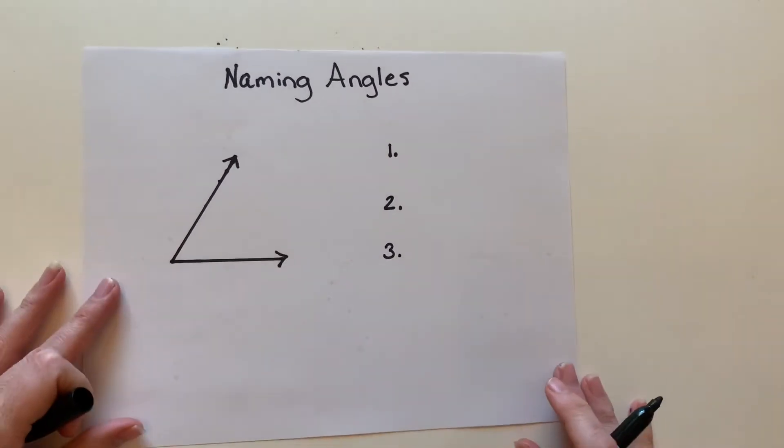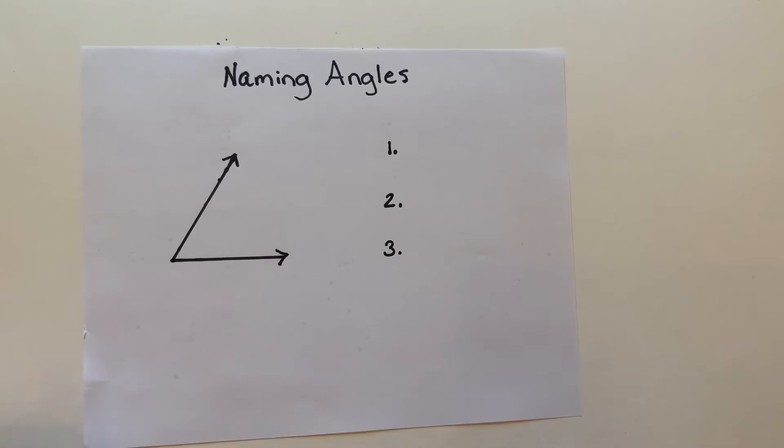Okay, so this lesson I'm going to show you today is how we name angles. We call angles by different names and I'm just going to show you how we would do that. Especially when we're measuring angles, we need to know the measurement of different types of angles, and the only way we can say what angles they are is by naming them.